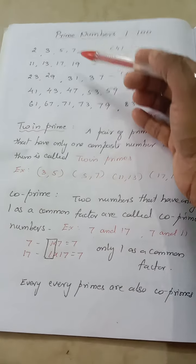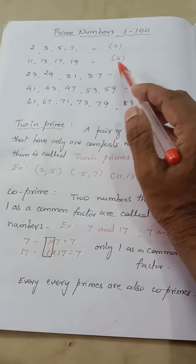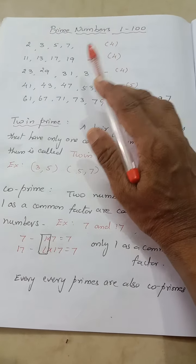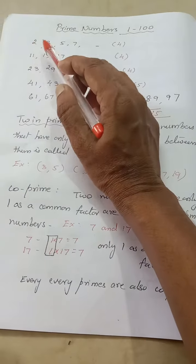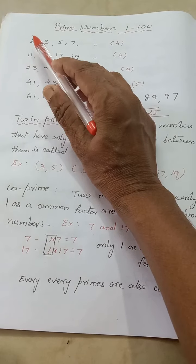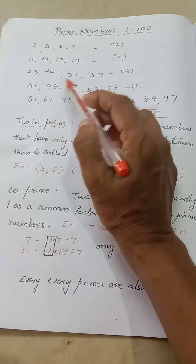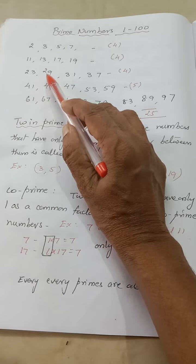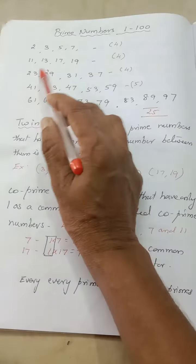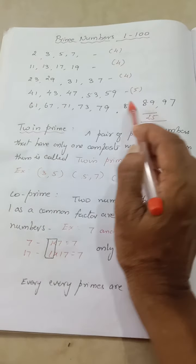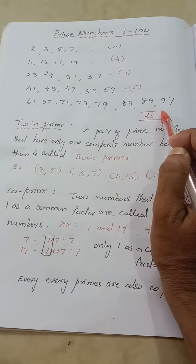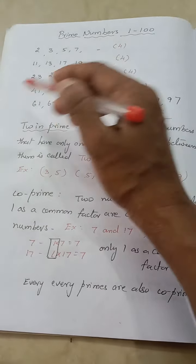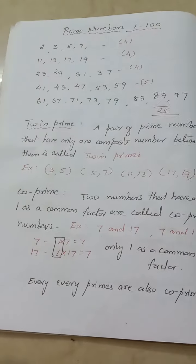Do you know what is a prime number? Numbers which cannot be divided by any other number are called prime numbers. For example, 2 will go only in the second table. If I take 29, I can't divide 29 by any other number. So these types of numbers are called prime numbers.